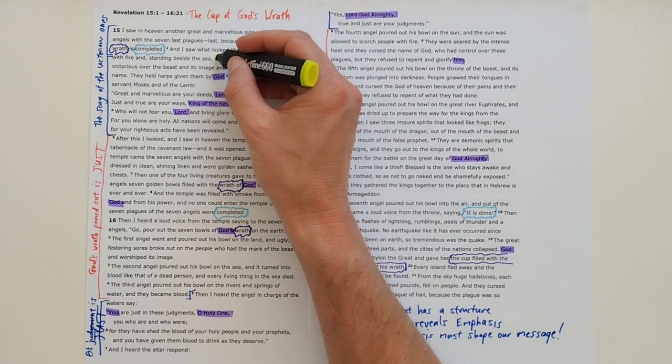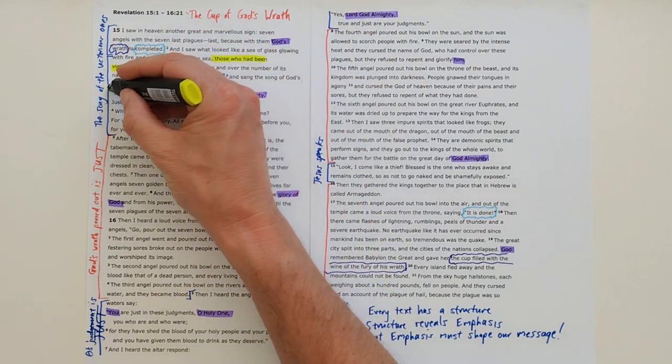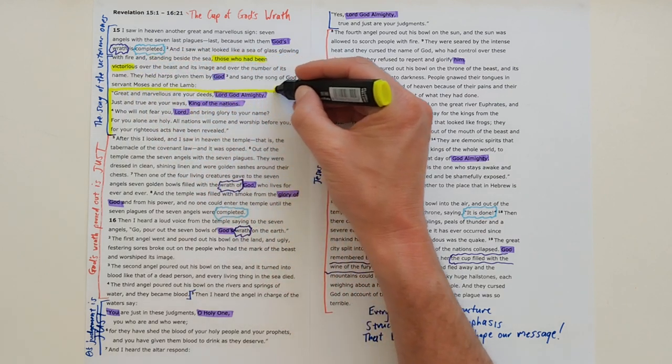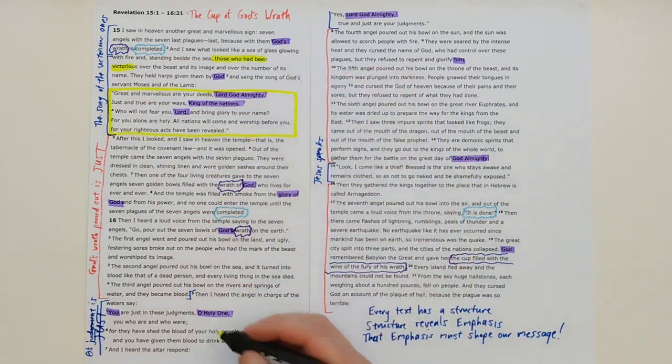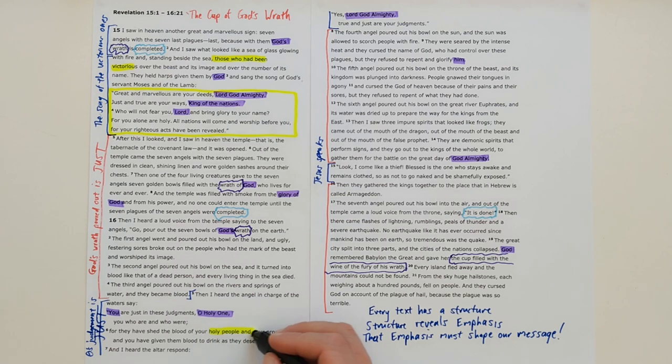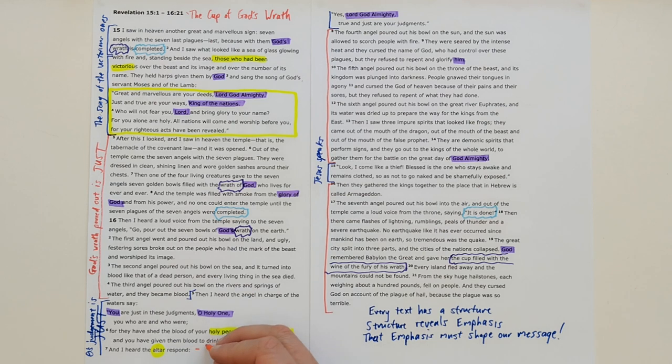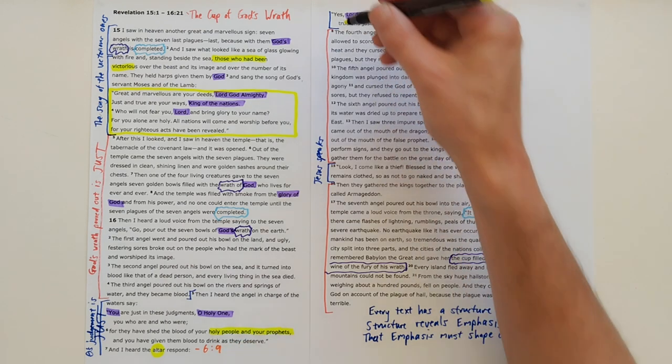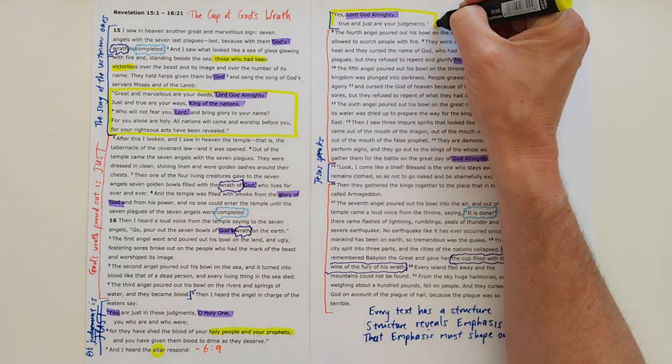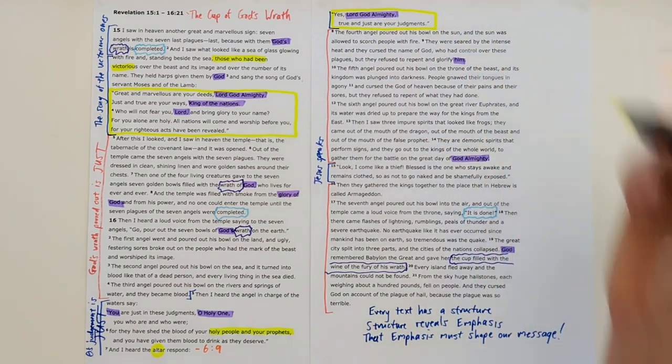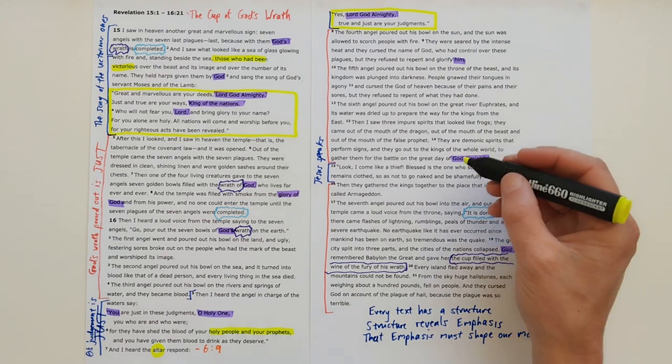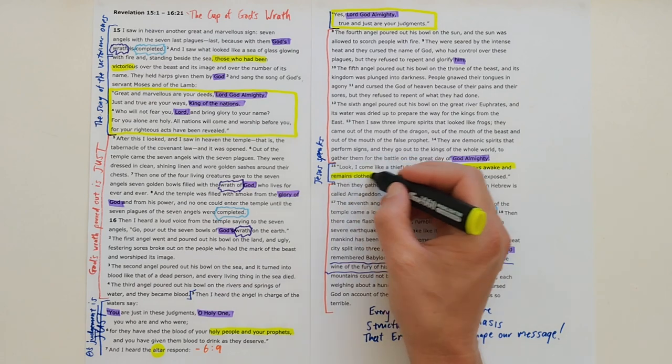In this opening section we see those who had been victorious and we hear them singing. And we see the victorious ones spoken of as the holy people and the prophets, and they are also the voice that comes from the altar. We saw this in chapter 6 verse 9 - we heard the martyrs crying out 'how long, oh Lord?' And here their prayer is being answered.